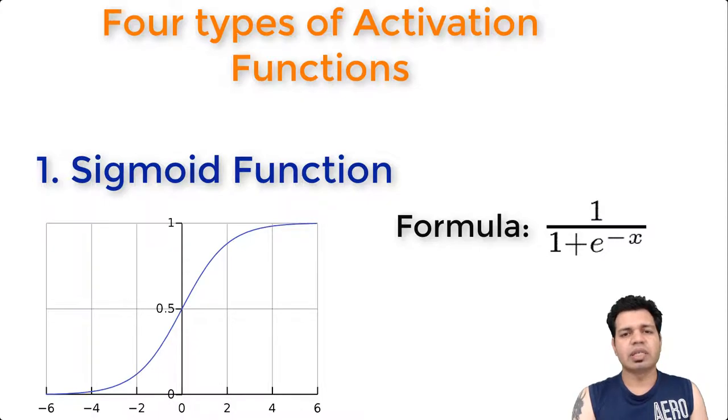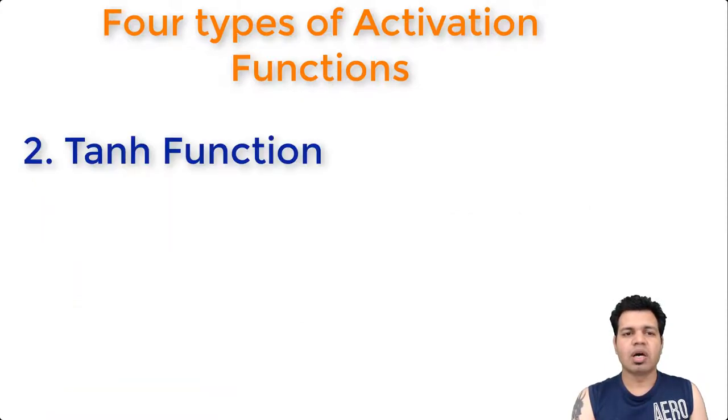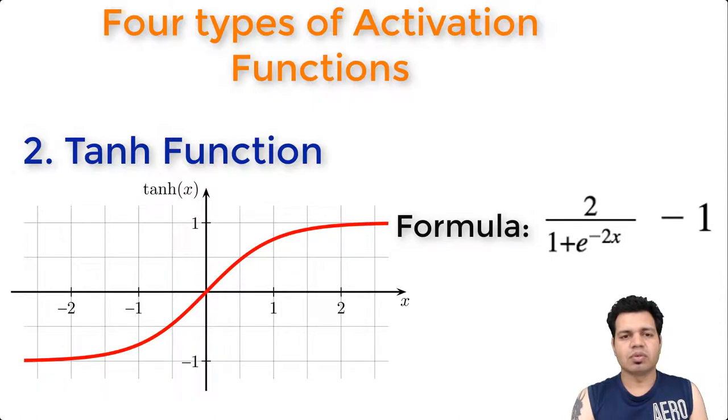Number two in the list is tanh or hyperbolic tangent function. Let's first see the visual form of tanh function. Here you can see the visual associated with this tanh function. Like the logistic sigmoid function, the tanh function is also S-shaped, but instead outputs values that range from minus one to one.